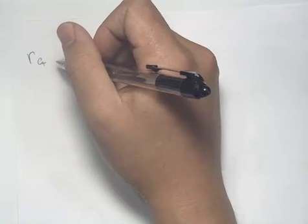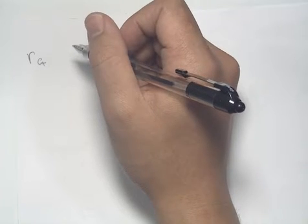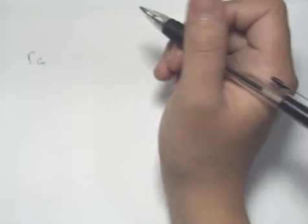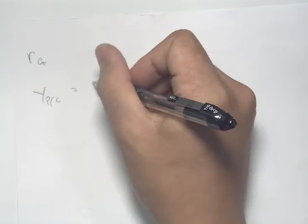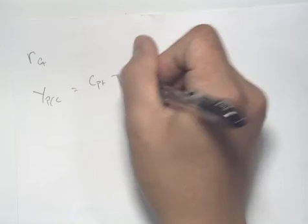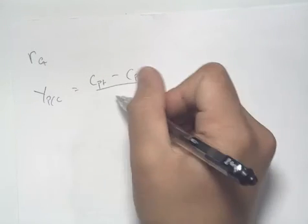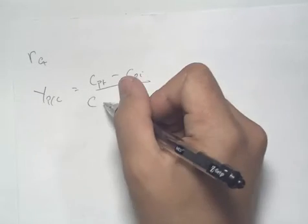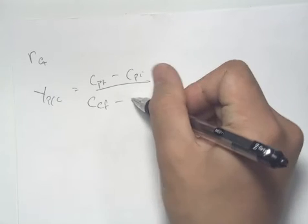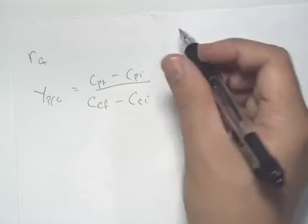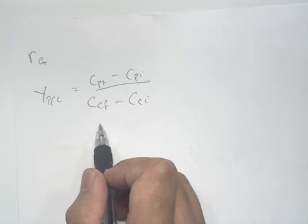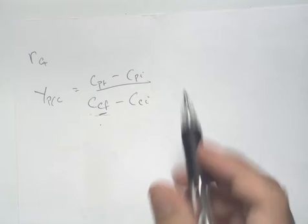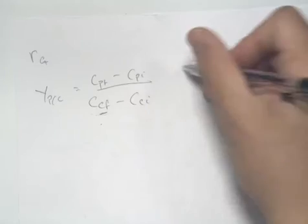We can then calculate our growth rate Rg. To do this, we first need to calculate our cell concentration using the yield coefficient Y, product over cell. We have Y product over cell equal to our final product concentration CpF minus our initial product concentration, over our initial and final values for cell concentration. We can rearrange this equation to express it in terms of our final cell concentration Cf by moving terms accordingly.